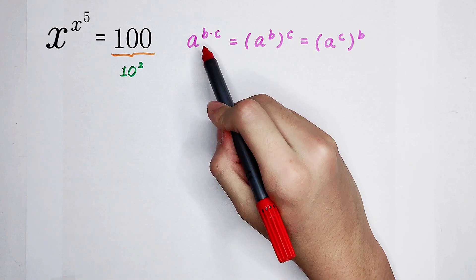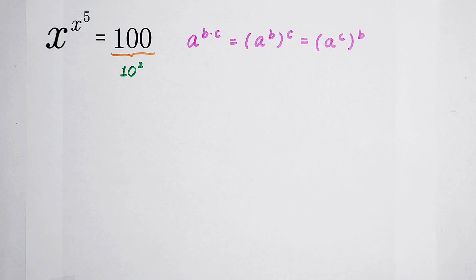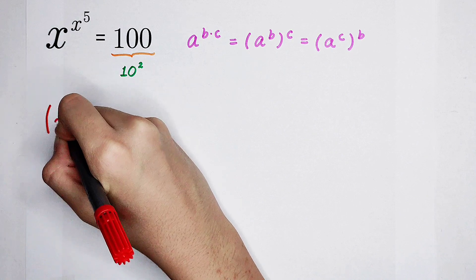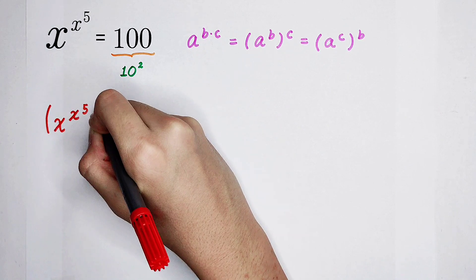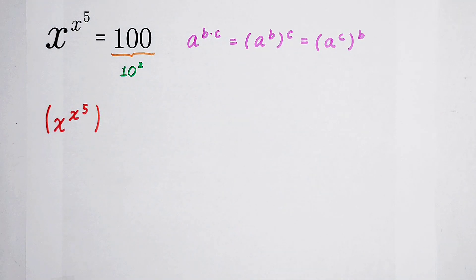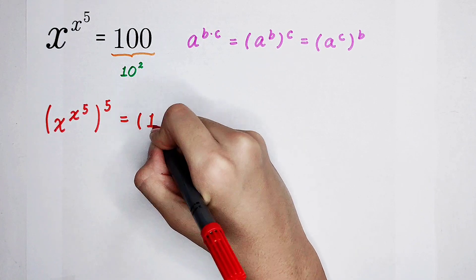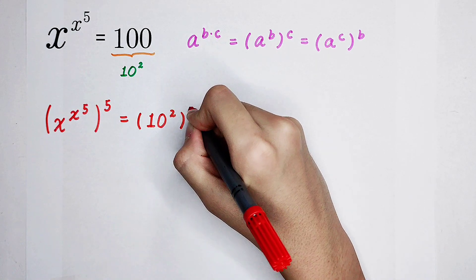Because a to the power of b times c equals a to the power of b all to the power of c, that means we should take a fifth power on both-hand sides. The left-hand side is still x to the power of x to the power of 5, and then the large exponent is 5. The right-hand side, because we have written 100 as 10 squared, so it is 10 squared, and then all to the power of 5.